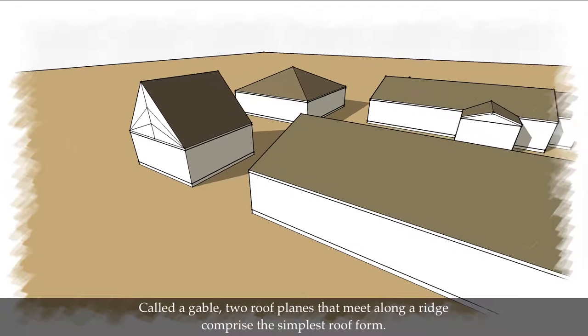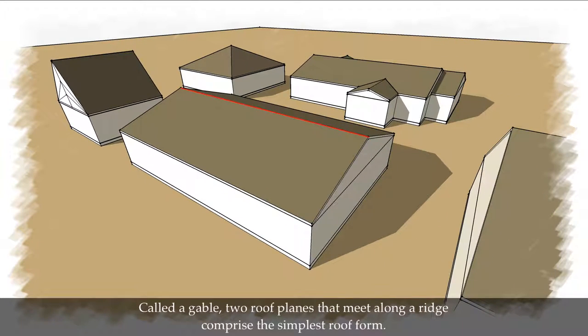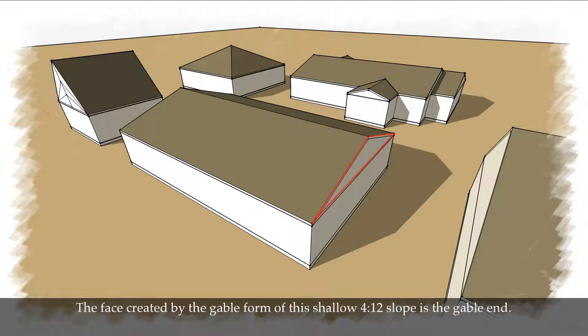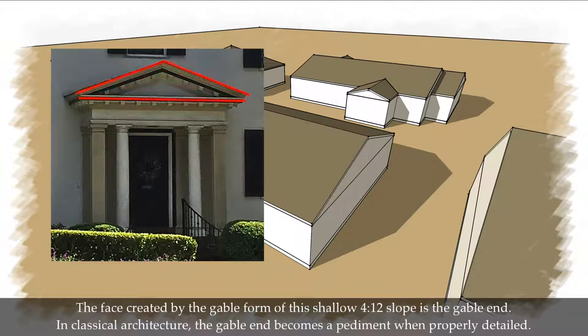Called a gable, two roof planes that meet along a ridge comprise the simplest roof form. The face created by the gable form of this shallow 4-12 slope is the gable end. In classical architecture, the gable end becomes a pediment when properly detailed.